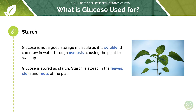Therefore plants can store glucose as starch. Starch is stored in the leaves, stem and the roots of the plant, and because starch is not soluble it's not going to cause this osmotic water movement into plant cells. That's why plants store glucose as starch — because glucose is soluble and would cause plant cells to swell up and burst, whereas starch is not going to have that effect.